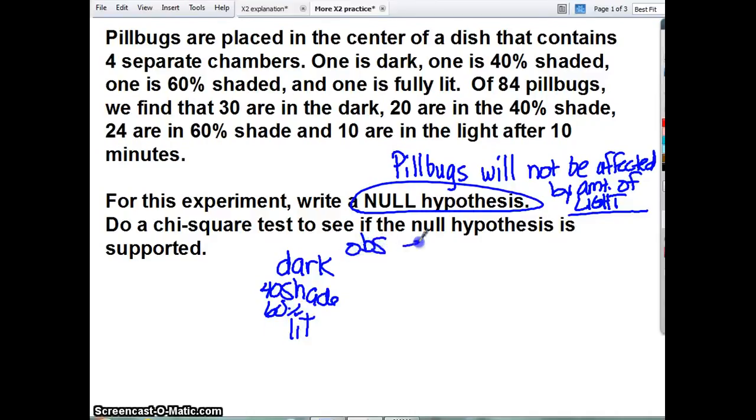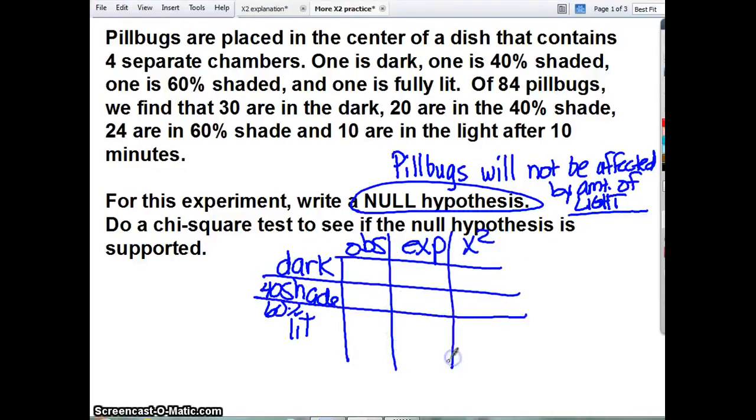We're going to do our same thing. Observed, expected, chi-square. The only thing that's going to be different in this one is whenever you do a null hypothesis, you're predicting that there's going to be no difference. By predicting there's no difference, it makes it really easy to make your predictions. So we had 84 bugs, and we predicted 30, 20, 24, and 10. This is our observed.